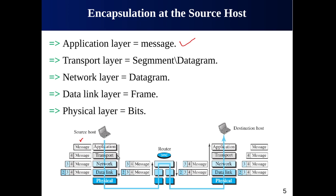At the second layer, the transport layer receives the message as a payload. The transport layer then adds a header to this payload — represented by the number four — which contains identifiers of the source and destination application programs that want to communicate, since communication is between different processes and each process has a unique identifier.